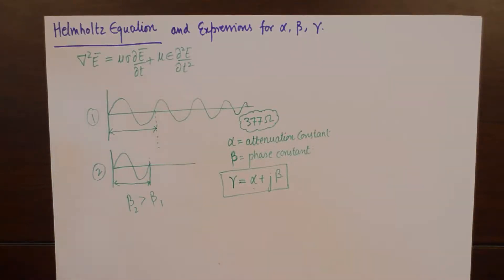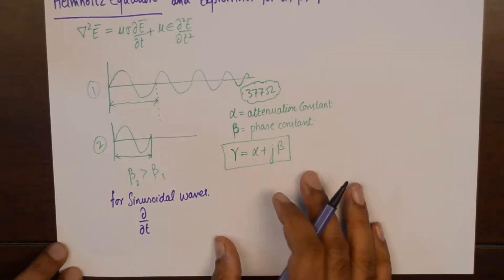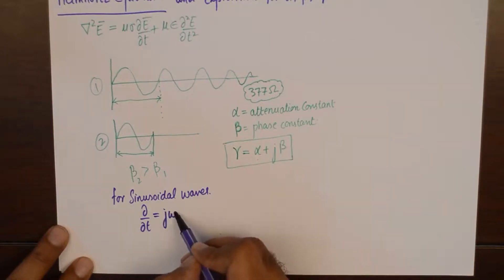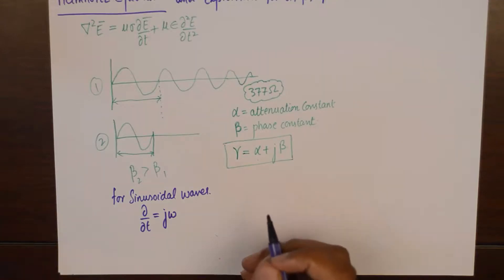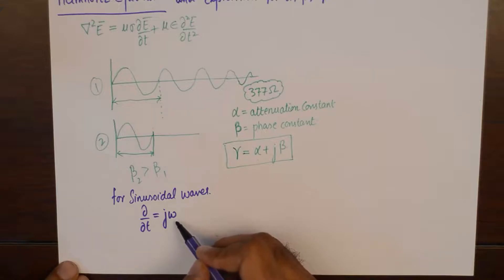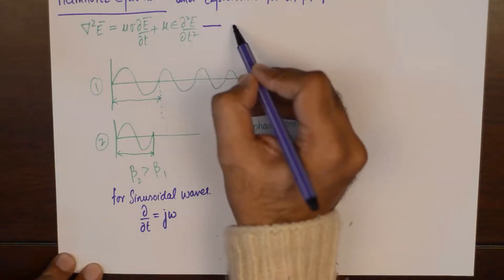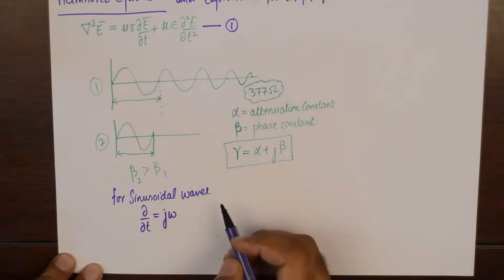In order to derive mathematical expressions for alpha and beta for any wave equation, we take help of Helmholtz equation. So it is essential to derive Helmholtz equation first and then extract alpha and beta from that Helmholtz equation. Now Helmholtz equation assumes that the waves that we are talking about are sinusoidal in nature. So for sinusoidal waves, the time rate change is substituted by j omega, where omega is the angular velocity.